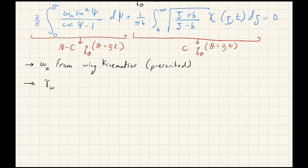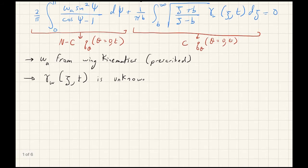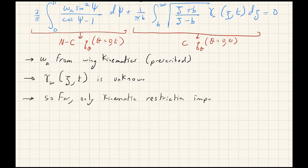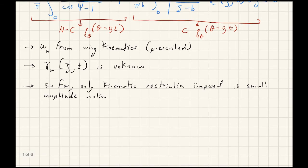γ_w as a function of ξ and t is unknown. So far, the only kinematic restriction we have imposed is small amplitude motion. We used that restriction to introduce a perturbation velocity potential field. Now we're going to include an additional restriction to the kinematics that would help us solve the problem.